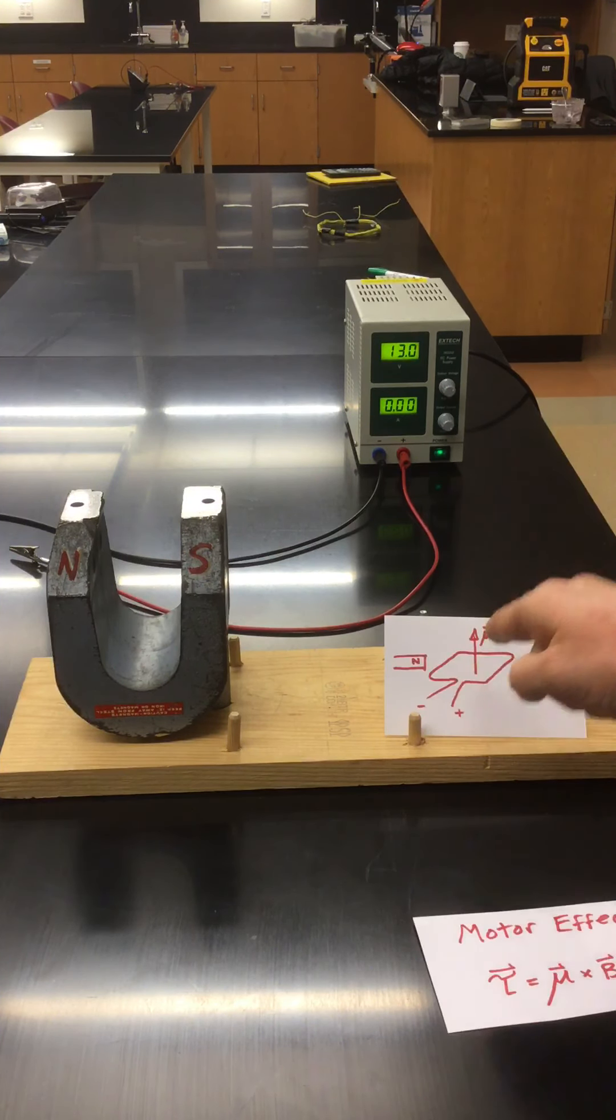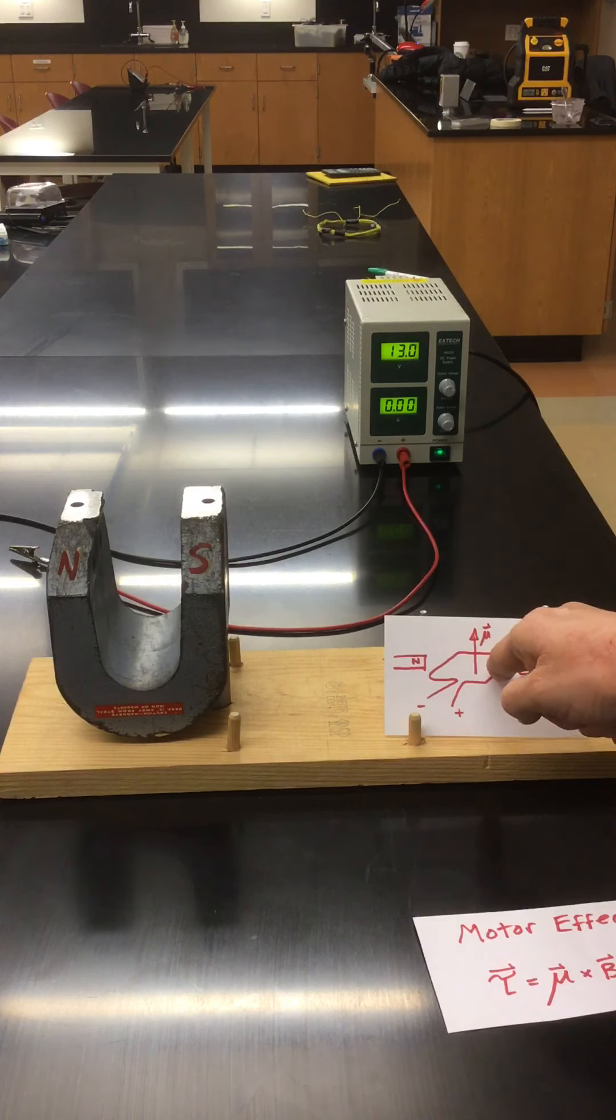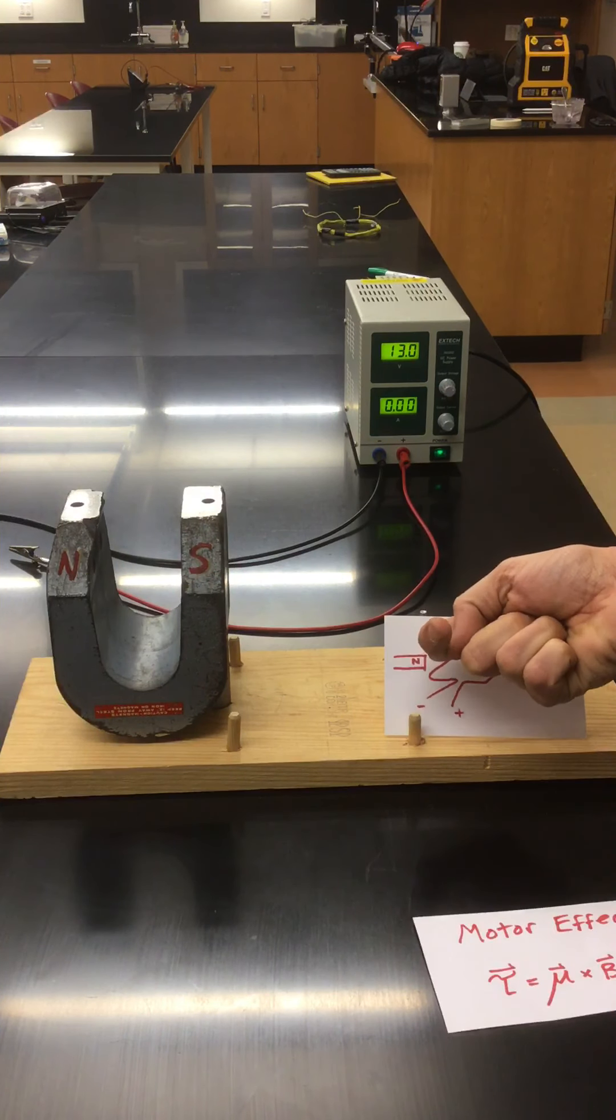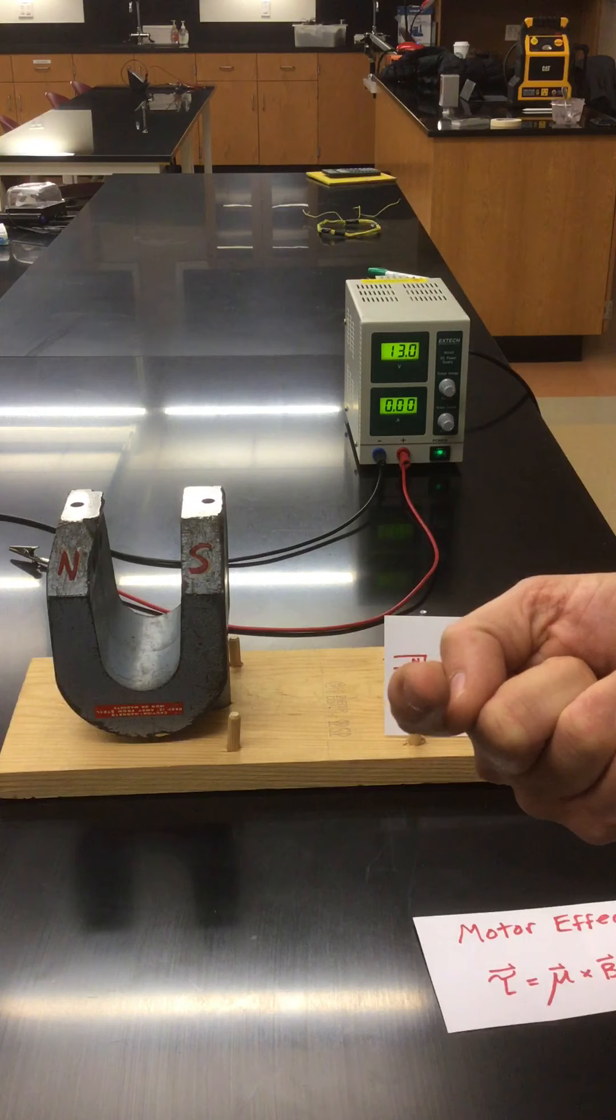Now this is a three-dimensional drawing, isn't it? So current would be flowing into the page or into the note card here. Then the current would flow to the left. And in this segment of wire, current would be coming basically out of the note card, right?